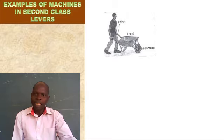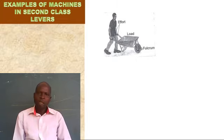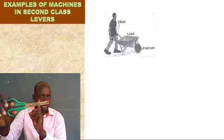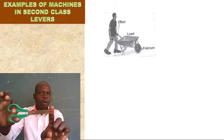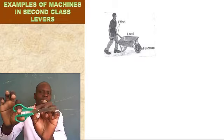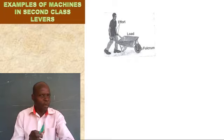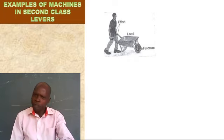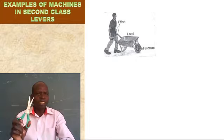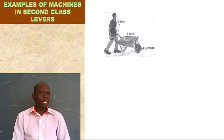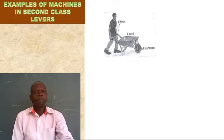When you look at this tool carefully, you will realize that just like for the first class lever we said the pivot is in the middle — we always consider the middle part among the three: effort, pivot, and load. The middle part for the first class lever is the pivot. But for this wheelbarrow, which is the middle part? It is not the pivot which is in between. For the second class lever, we are seeing it is the load which is in between the effort and the fulcrum.